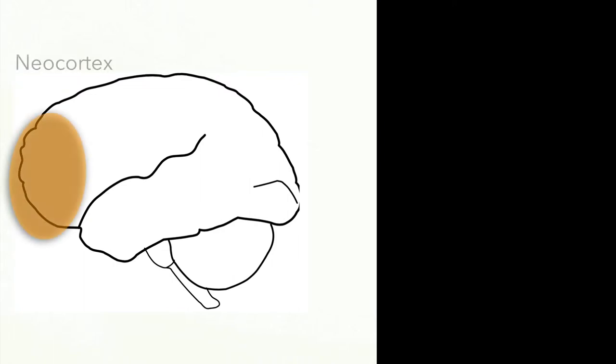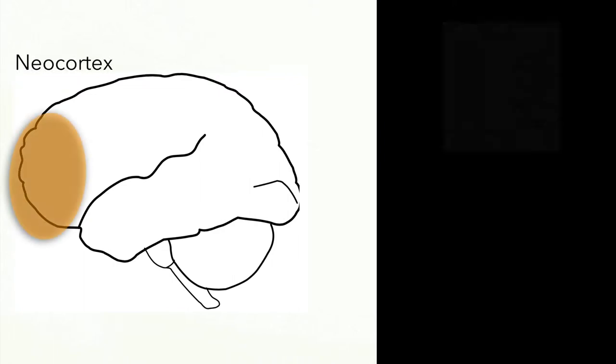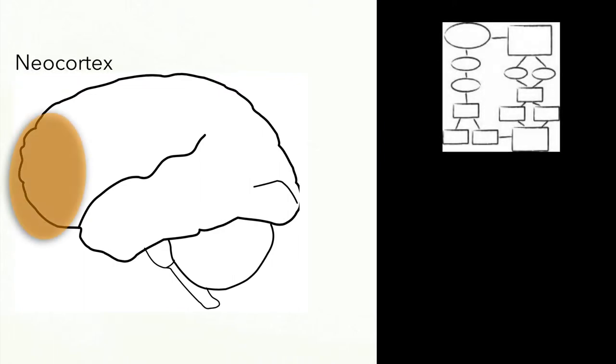Another brain system called neocortex does the opposite of this. Instead of basing decisions and actions on instincts, neocortex likes to chew on the incoming sensory information.